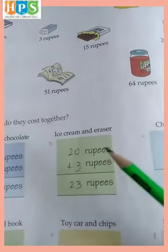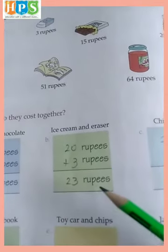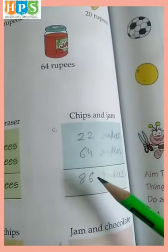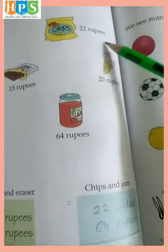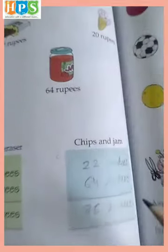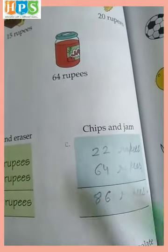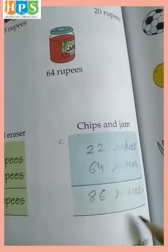Ice Cream and Eraser: Ice Cream rate is 20 rupees and Eraser 3 rupees. 20 rupees plus 3 rupees is equal to 23 rupees. Chips and Jam: Chips 22 rupees and Jam 64 rupees. 22 and 64: 2 and 4 equals 6, and 2 and 6 equals 8, so it means 86 rupees.